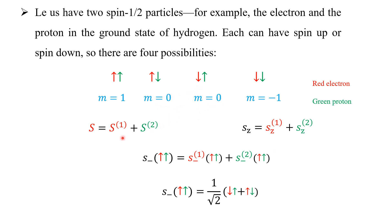The total spin S equals the spin of the first particle plus the spin of the second particle — that is, spin of the electron and spin of the proton. Throughout this lecture I am using red color for the electron and green color for the proton. Similarly, for the Z component, the total Z component is the Z component of particle 1 plus the Z component of particle 2.